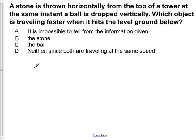A stone is thrown horizontally from the top of a tower. At the same instant a ball is dropped vertically. Which object is traveling faster when it hits the level ground below?